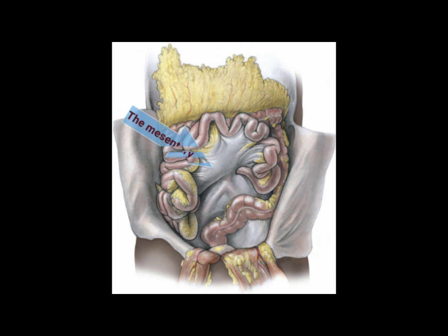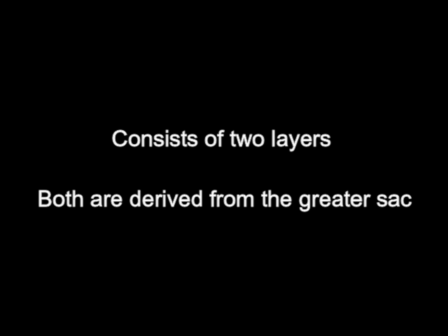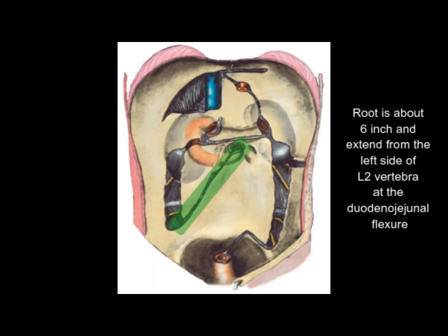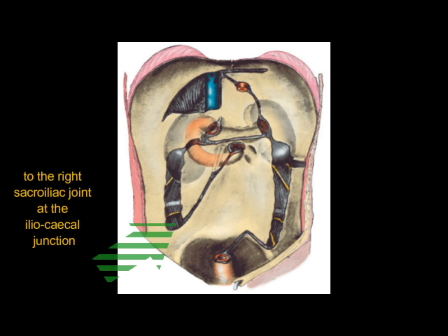This is a broad fan-shaped fold of peritoneum which suspends the jejunum and ileum from the posterior abdominal wall. It consists of two layers, both derived from the greater sac. The mesentery presents two borders: the vertebral border or root, and the intestinal or free border. The root is about six inches long and extends from the left side of the L2 vertebra to the right sacroiliac joint at the ileocecal junction.